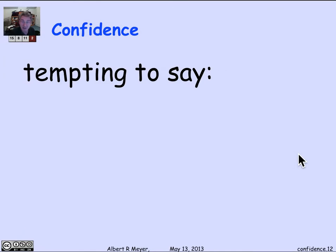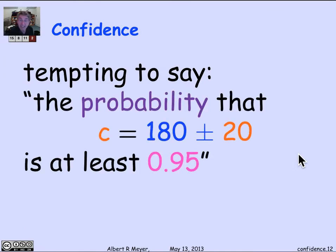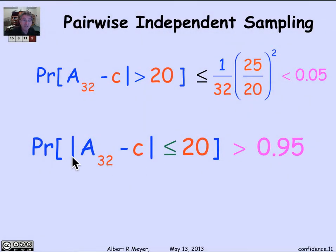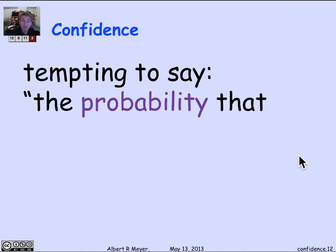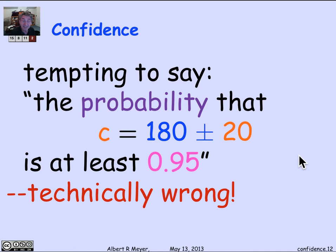We would like to be able to say now that the probability that the unknown C is the 180 that we measured for A_32 plus or minus 20 is at least 95%. That seems to be what the theorem told us. Let's go back. The theorem says that the probability that A_32, which we measured to be 180, minus C is less than or equal to 20, is greater than 0.95. So we should go back and tell the EPA that the probability that C is less than 200 with probability 0.95. We'd be pretty tempted to say that, but it's not right. It's technically the wrong thing to say.